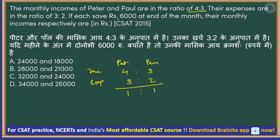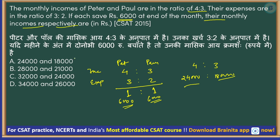Thankfully both of them save the same amount — ₹6,000. So 1 unit = ₹6,000 in both cases. The question asks for their monthly incomes: incomes are in ratio 4:3, so Peter's income = 4 × 6,000 = ₹24,000 and Paul's income = 3 × 6,000 = ₹18,000. Answer: option A.